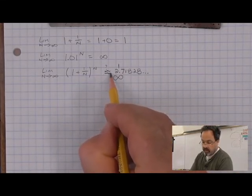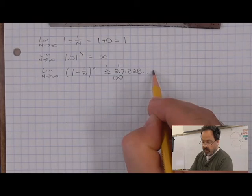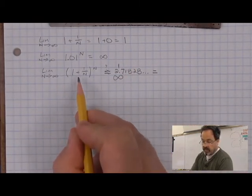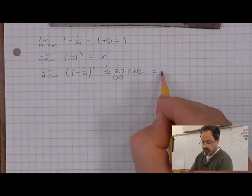It's approximately equal to that. But we have a symbol that we have given for the very special number that is the answer to this limit. And that symbol is e.